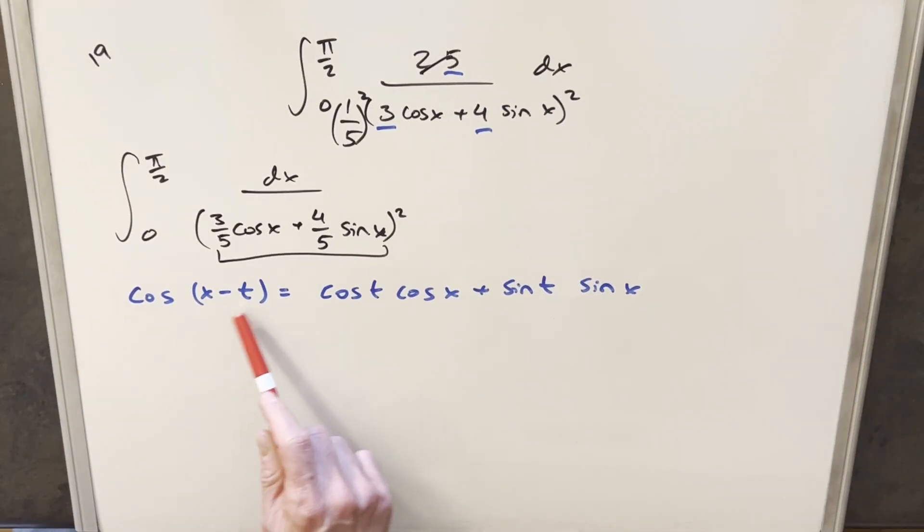Okay, so using this formula we have here for angle difference, we have our cosine x here and here. We have our sine x here and here. And so for this to work, we're saying cosine of t is equal to 3 fifths and sine of t is equal to 4 fifths.